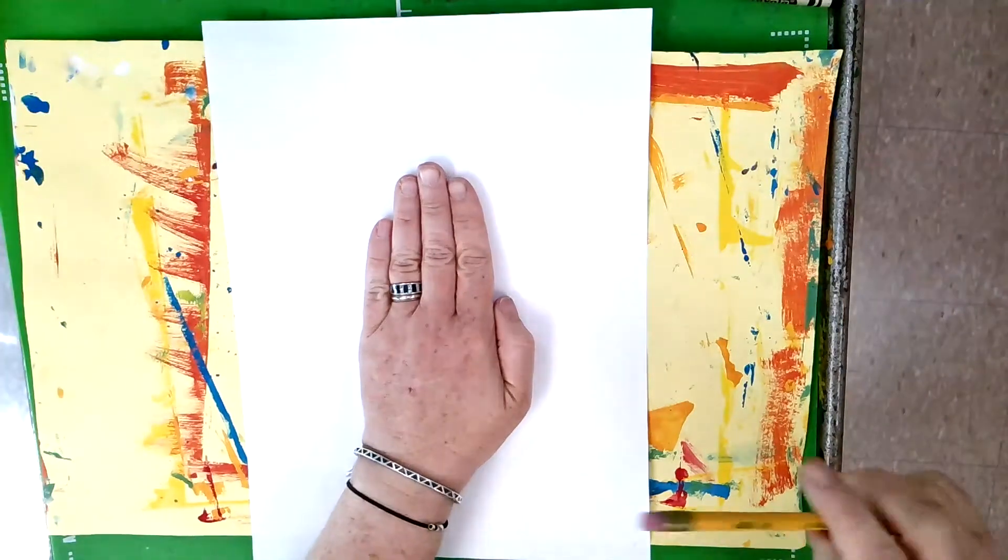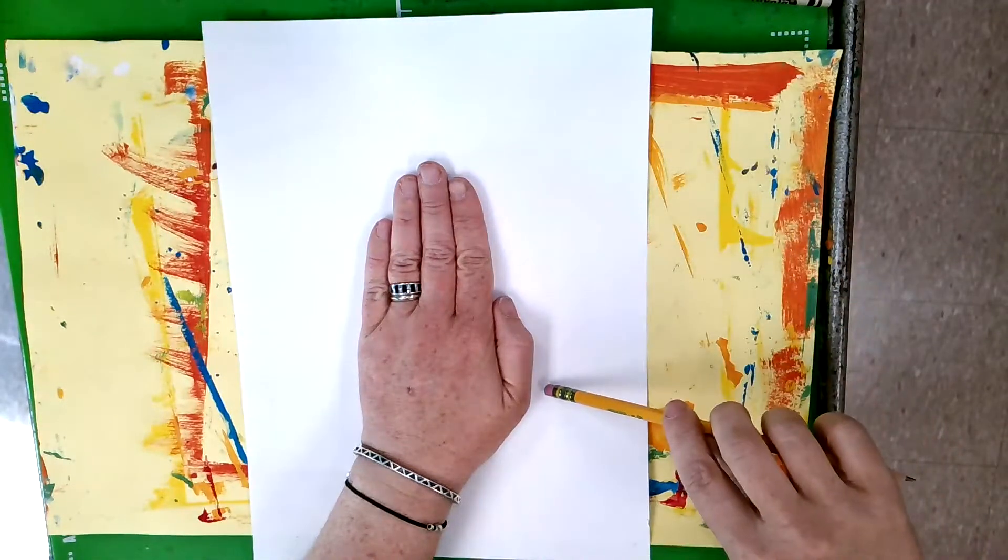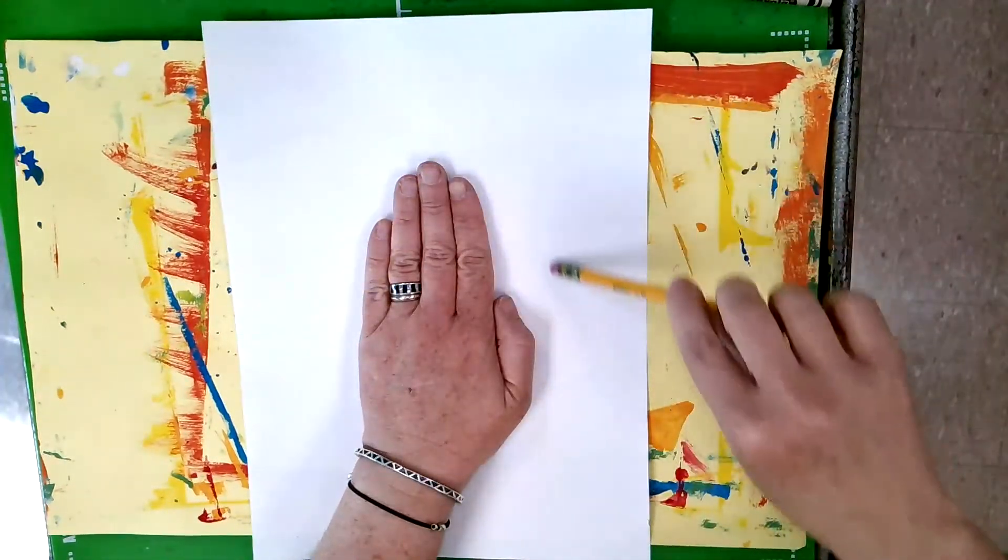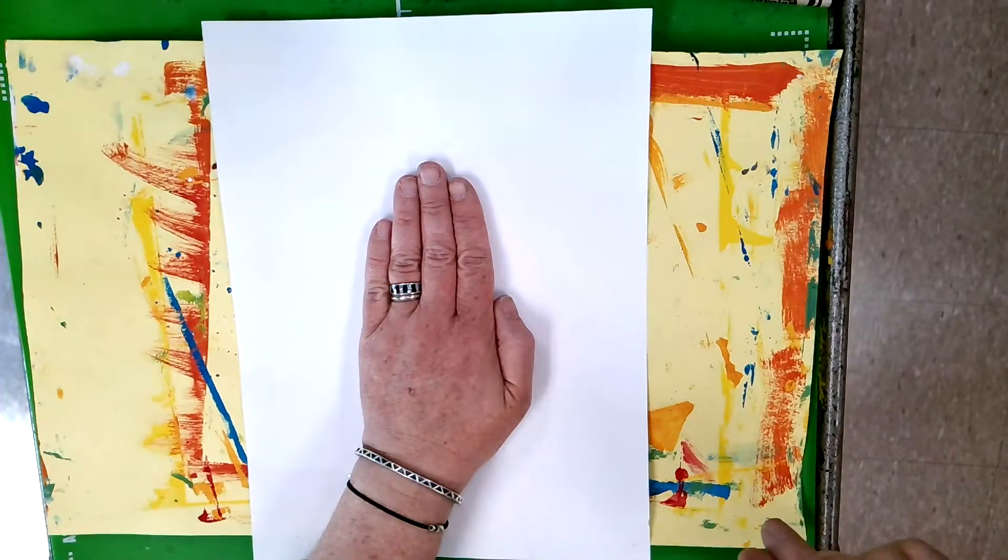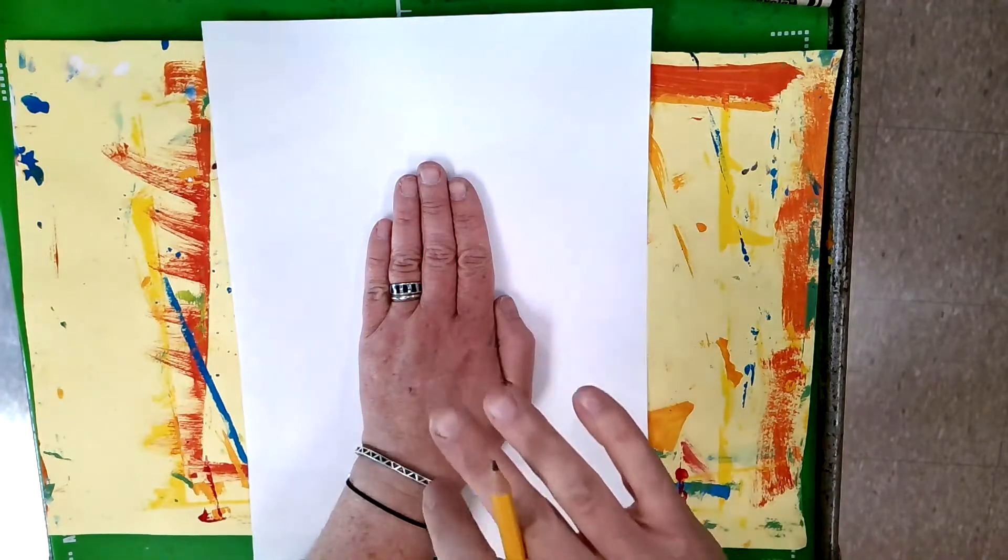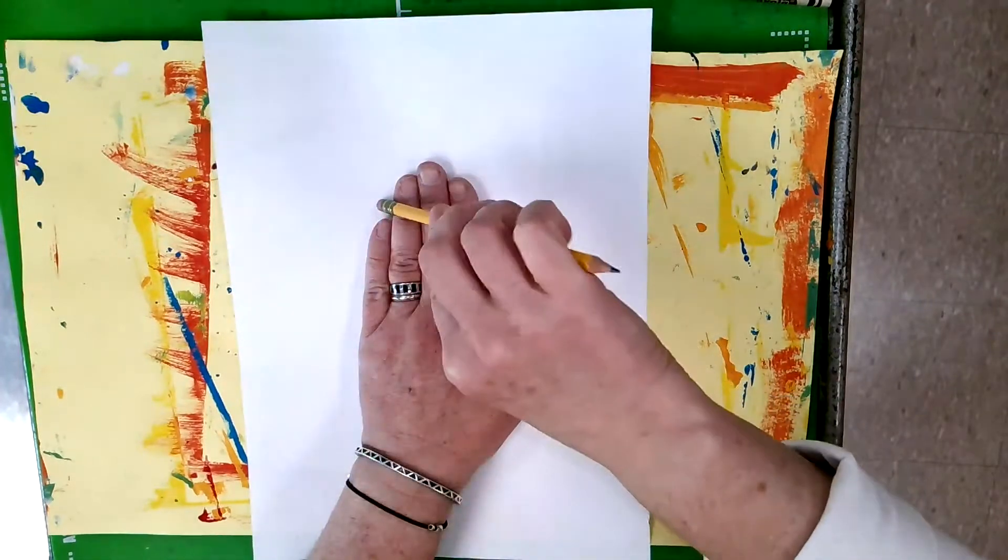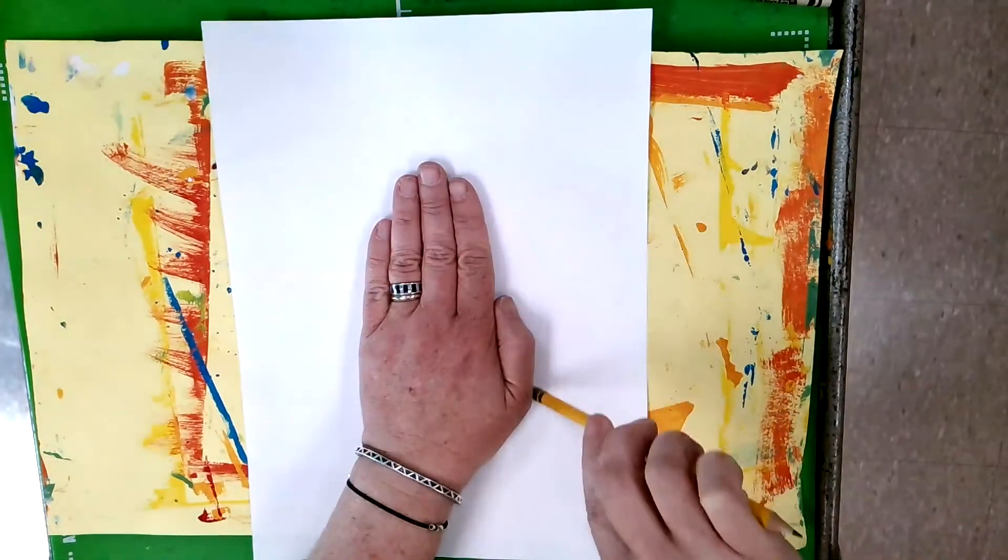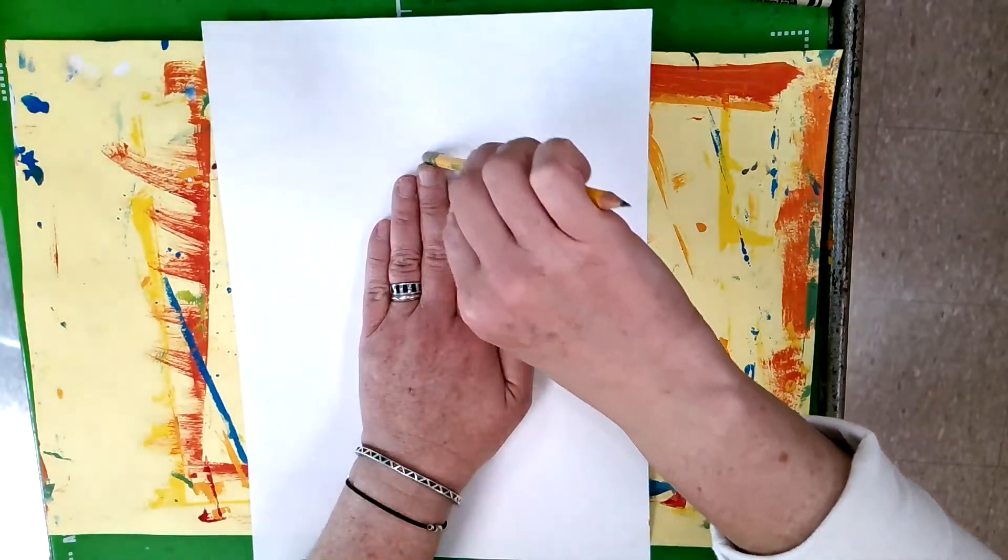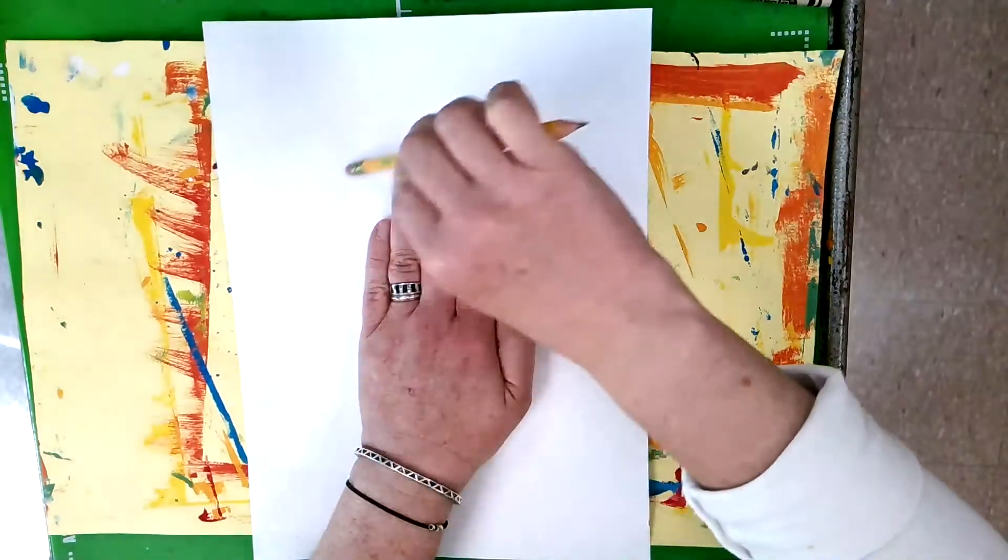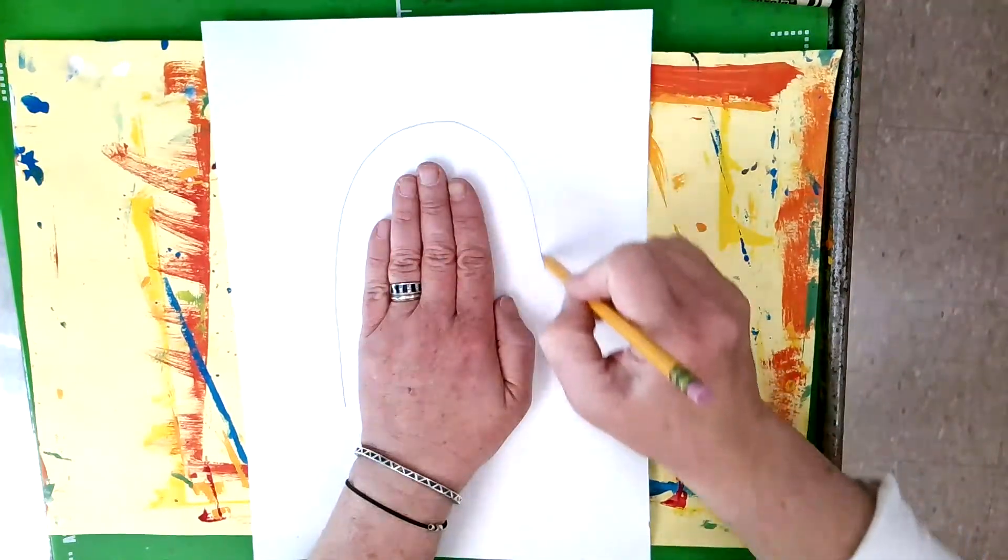If you put your hand down in the middle of the paper and you draw up and over and back down like a rainbow, up and over and back down or a hill, that will be the start of your oval and will ensure that you're making the right size oval. What you shouldn't do is trace up against the fingers. That will not make an oval, that will make an outline of your hand. So remember, do not trace up against your fingers.